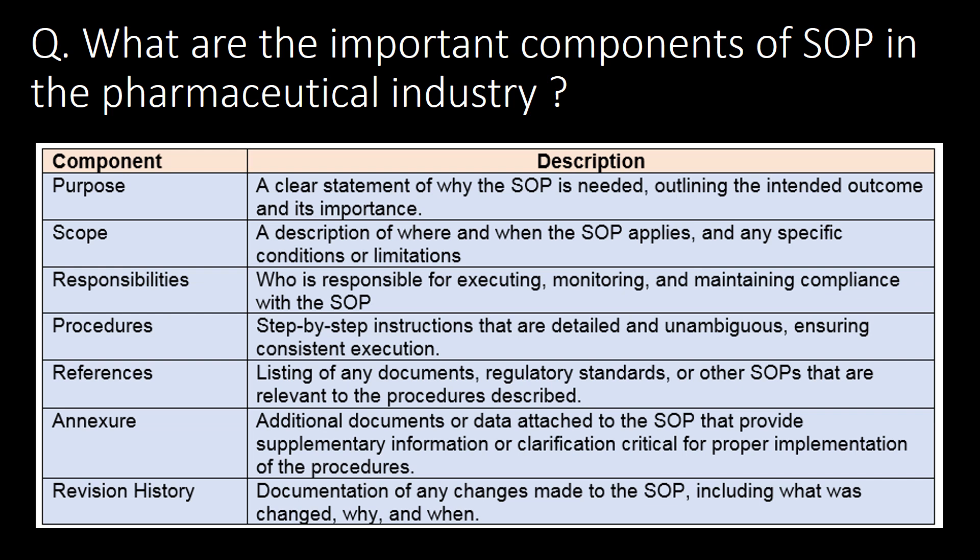Basic and important: what are the important components of SOP in the pharmaceutical industry? Purpose, Scope, Responsibilities, Procedure, References, Annexure, and Revision History are the important components of SOP in the pharmaceutical industry.